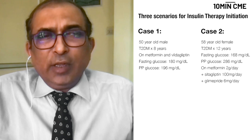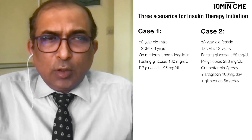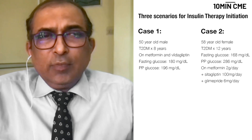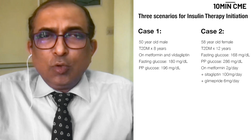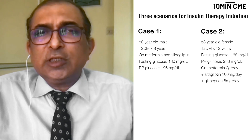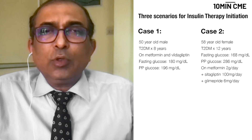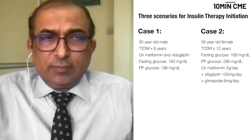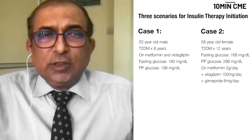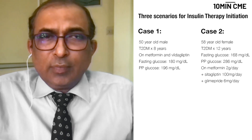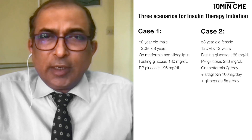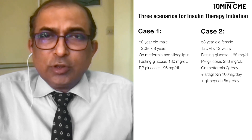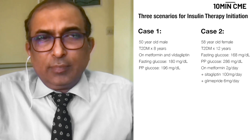In contrast, we have a 58-year-old lady who has been having diabetes for 12 years, with a fasting glucose of 168 and a post-prandial glucose level of 286. She is currently on metformin 2 grams per day, glimepride 6 milligrams per day, and sitagliptin 100 milligrams per day.